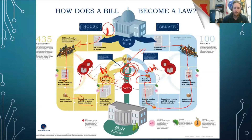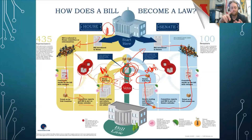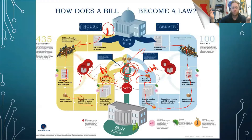So the bill is on its way to the White House — it's on the President's desk. The President has three options. First: sign the bill and have it become a law. The President likes the bill — it's a law.